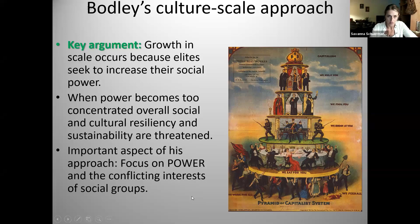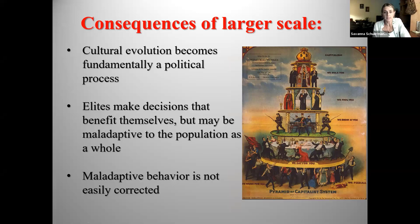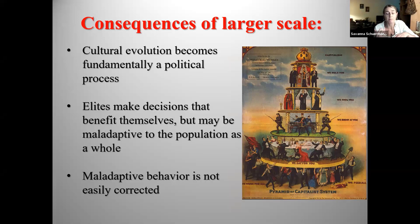Bodley says that cultural evolution at this point has become fundamentally a political process — it's no longer about being well adapted to your environment or meeting everyone's needs. It's political and about profits. Elites — the decision makers — make decisions that benefit themselves but might be maladaptive to the population as a whole. They do this because they're either not affected by the maladaptive consequences of their decisions and so don't recognize it, or because they're not affected, they do not care and do not correct for it.